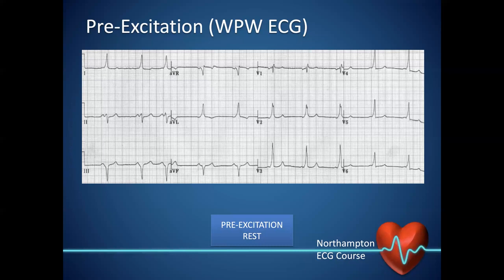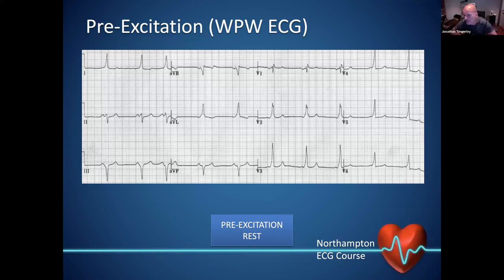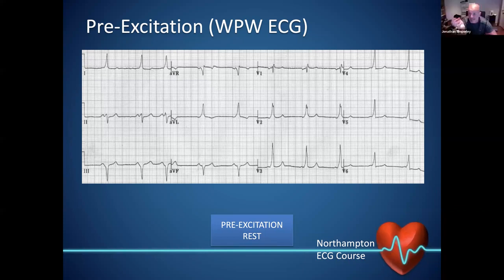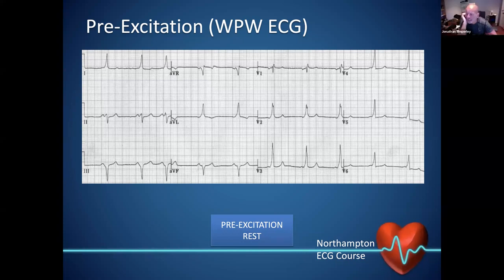Regarding coronary sinus origin tachycardias — it depends where in the coronary sinus the focus is. If it's coming from the coronary sinus ostium, it'll generally look like a right atrial tachycardia. If it's coming further around, it can look like a left atrial tachycardia. Most of them are more likely to be at the CS ostium rather than deep into the CS, so most will look like a right atrial tachycardia.